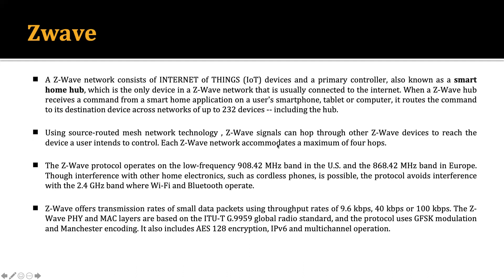Each Z-Wave network accommodates a maximum of four hops. This means if the Z-Wave hub sends a signal to one device, that device sends the signal to the next, then to another, and so on — making four-hop communication possible in Z-Wave.